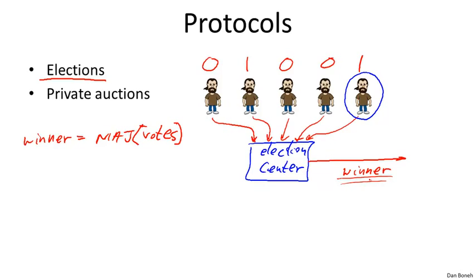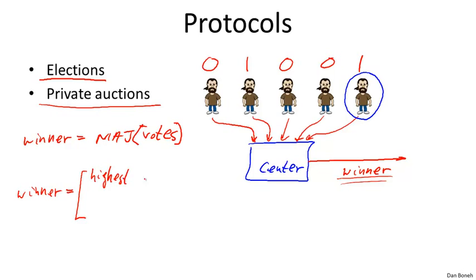In a private auction, every bidder has their own secret bid. The auction mechanism being used is called a Vickrey auction, where the winner is the highest bidder but the amount the winner pays is actually the second highest bid. What we'd like to do is enable participants to figure out who the highest bidder is and how much they're supposed to pay, while all other information about individual bids remains secret.